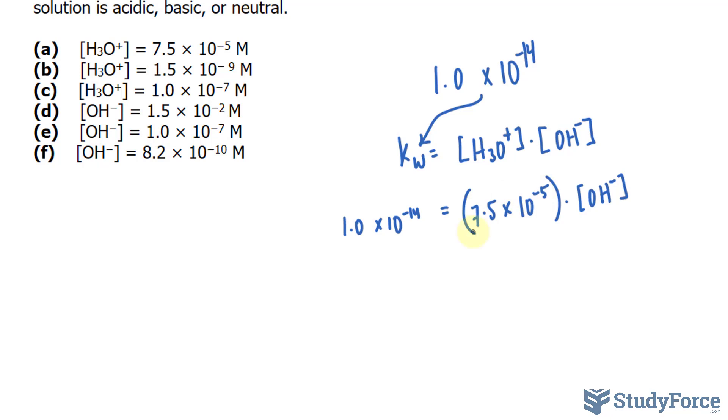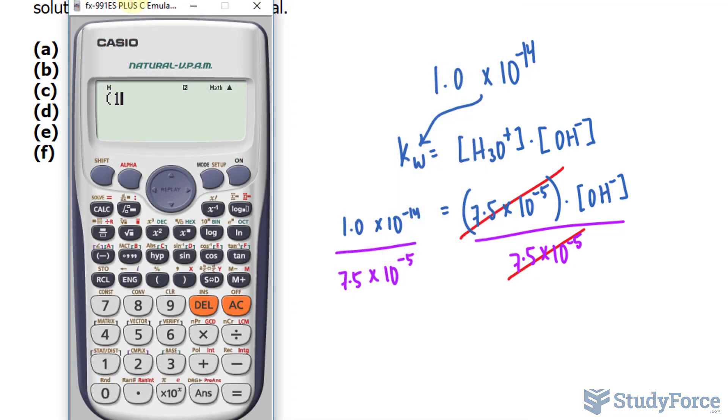So dividing both sides by this factor, this and this will cancel out, and the same applies on the left side. Now let's use our calculator: bracket 1.0 times 10 to the power of negative 14 divided by 7.5 times 10 raised to the power of negative 5.